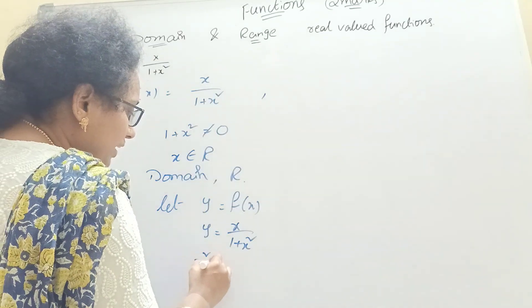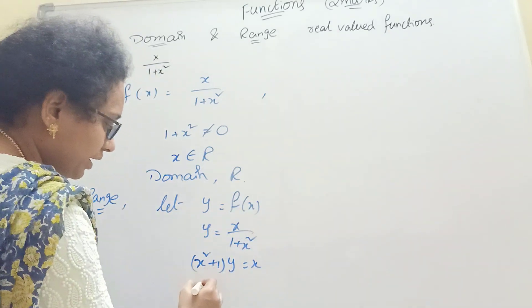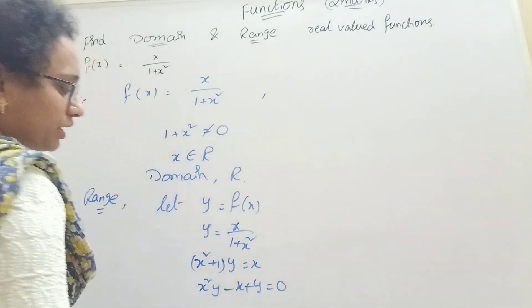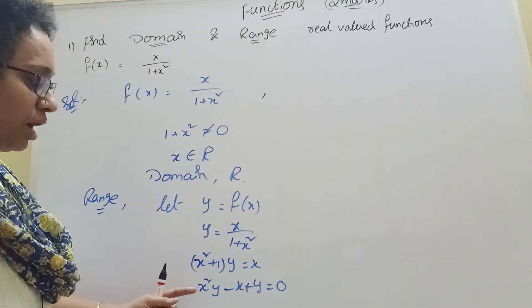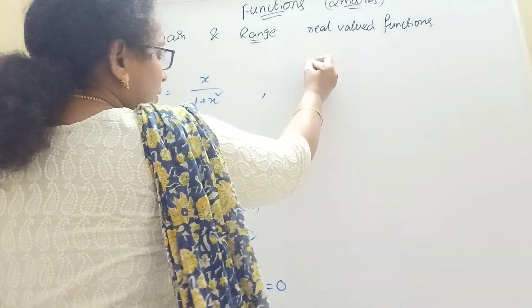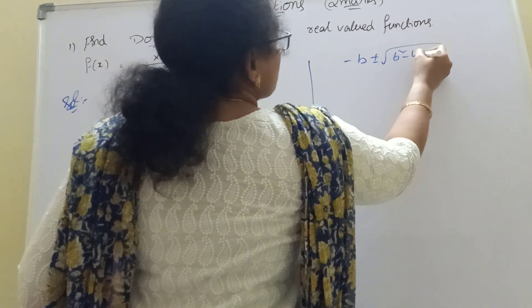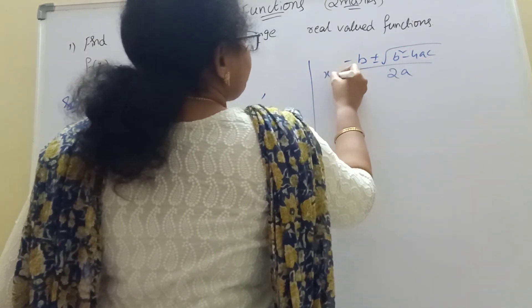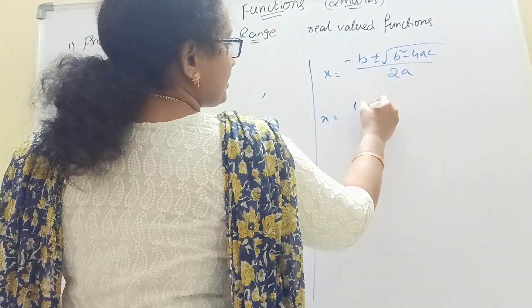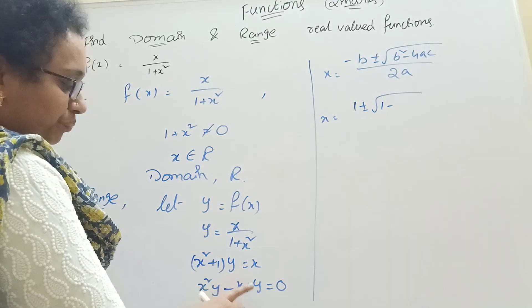Now take the implication: what is x square plus 1 into y equal to x. If you want to think of the equation, that is x square y, it will be yx squared minus x plus y equal to 0. This is a quadratic equation of x.